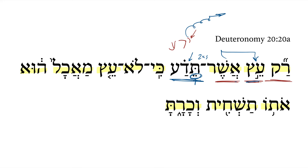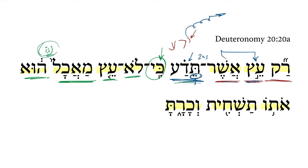And so we get: the tree which you know — and what do you know? That. This is an explanatory clause talking about what you know, and we would have to supply the verb here. If we put this in word order with the verbless clause, we would say 'not a tree of food is it,' meaning this is not a tree that would be edible or used for food.